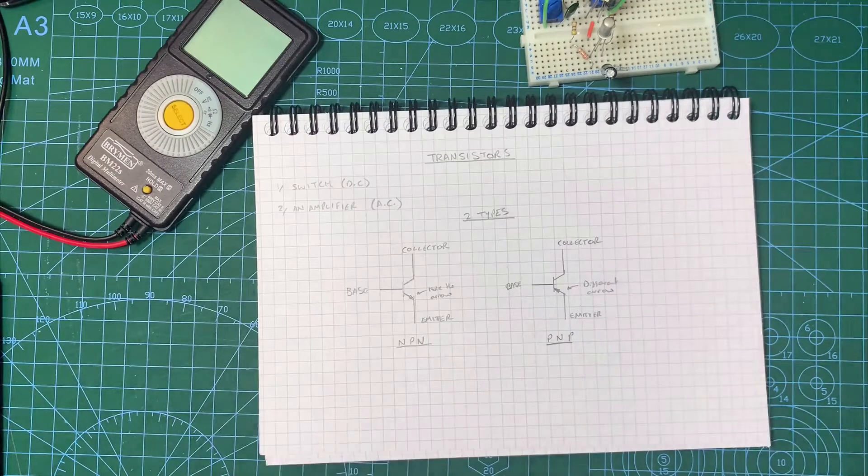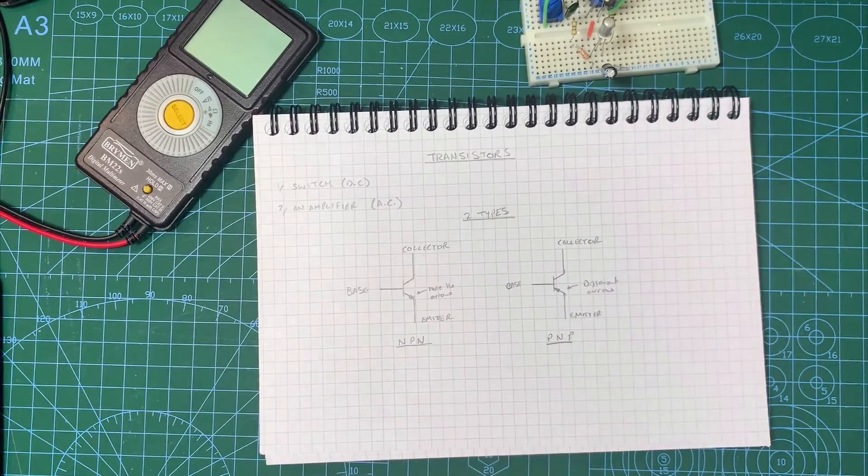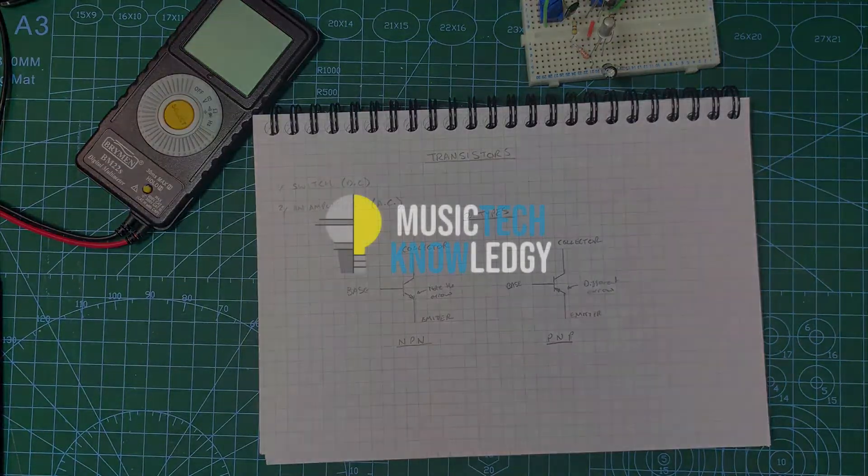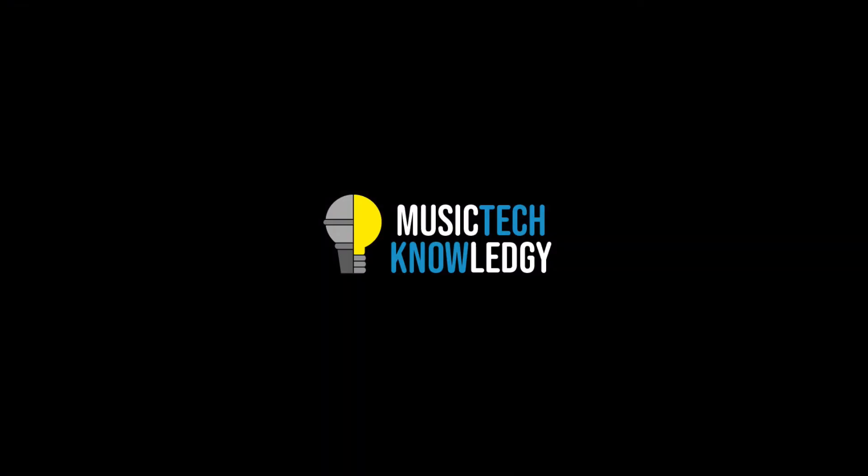Okay, so that's how a transistor works as a switch. Now what we're going to look at is how a transistor works as an amplifier.